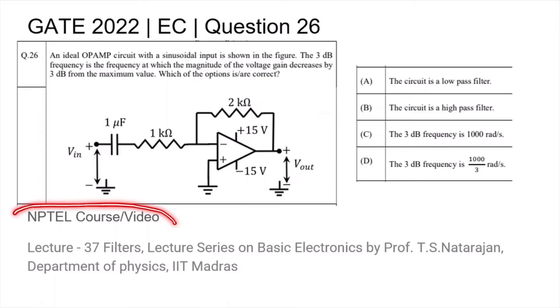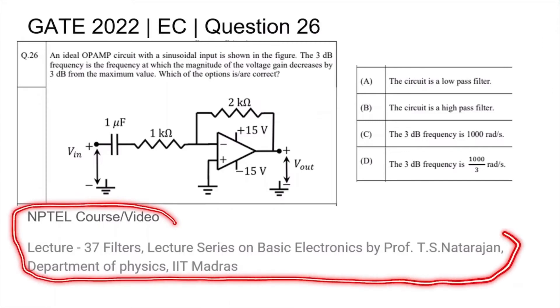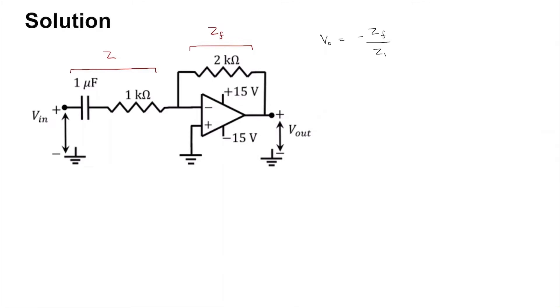Underneath the question, you will find the title of the NPTEL course or video relevant to this topic. So this is connected as an inverting amplifier, that is the gain V_out by V_in is minus Z_f by Z_1.